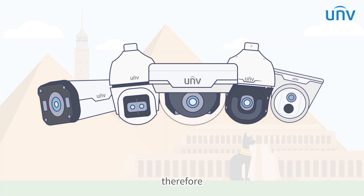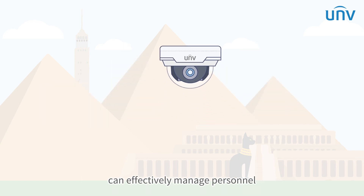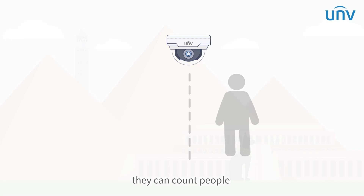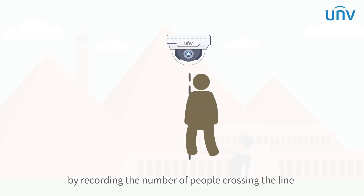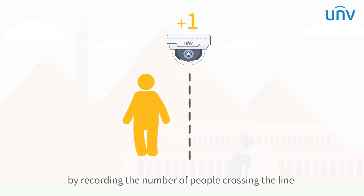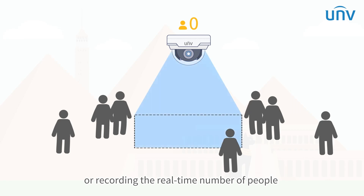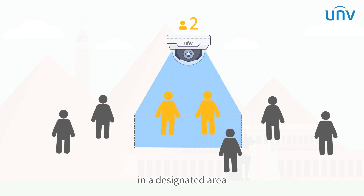Therefore, UNV IP cameras with people counting function can effectively manage personnel. They can count people by recording the number of people crossing the line, or recording the real-time number of people in a designated area.